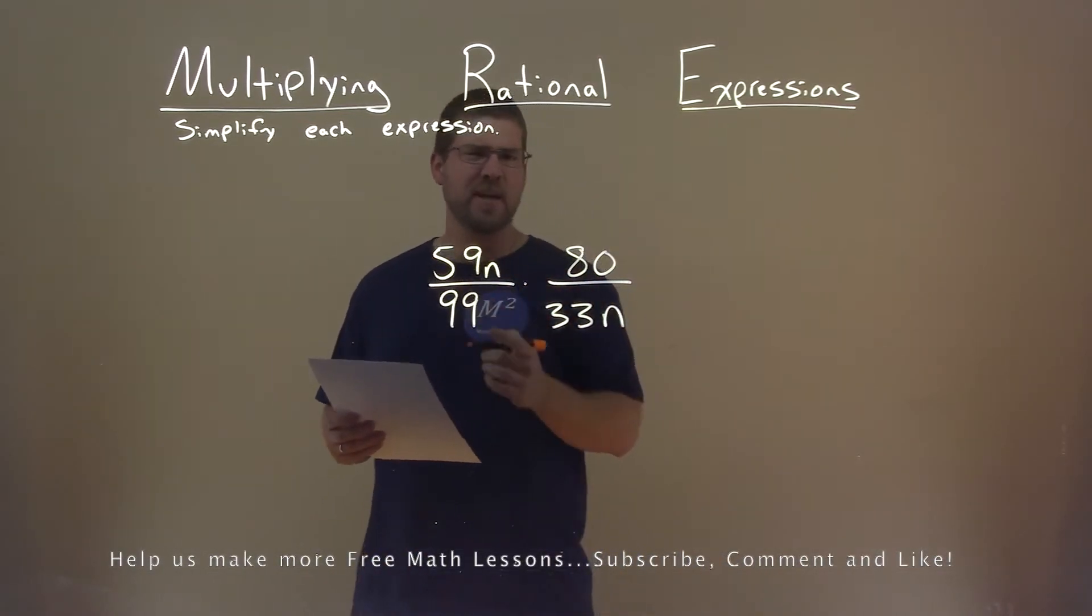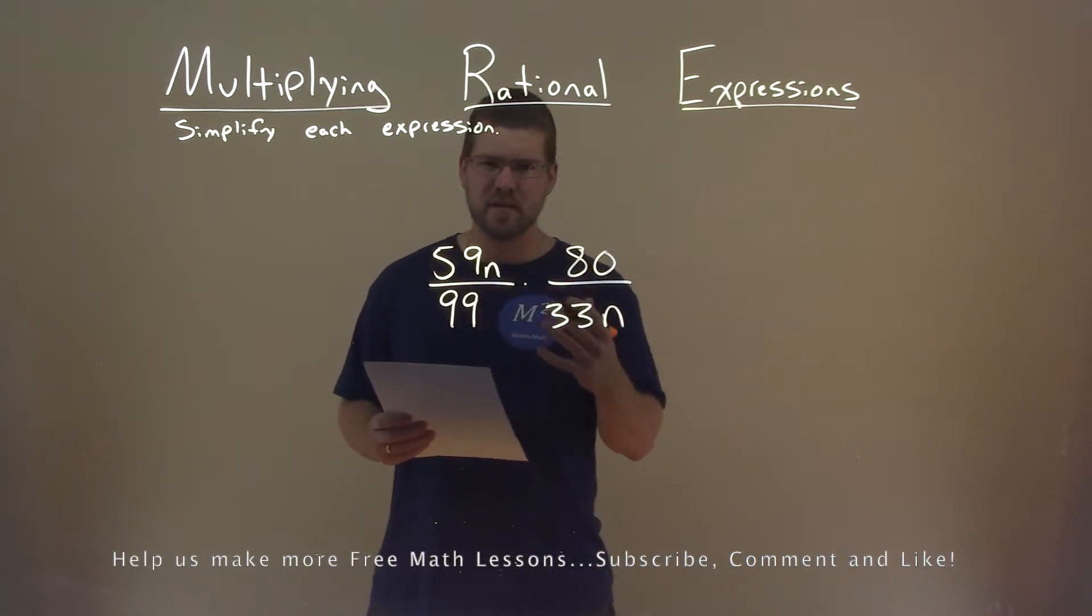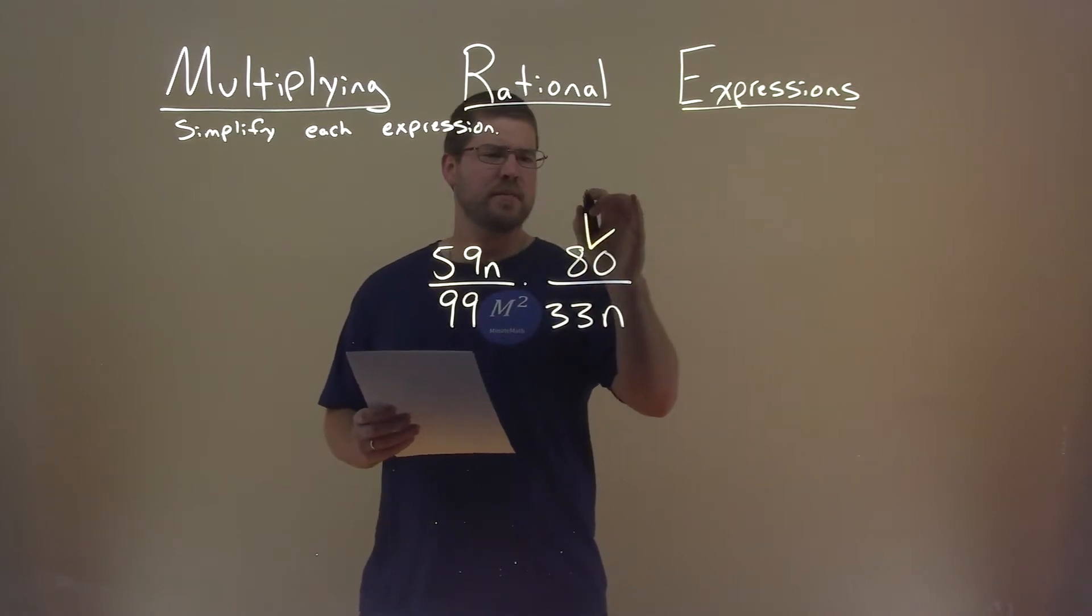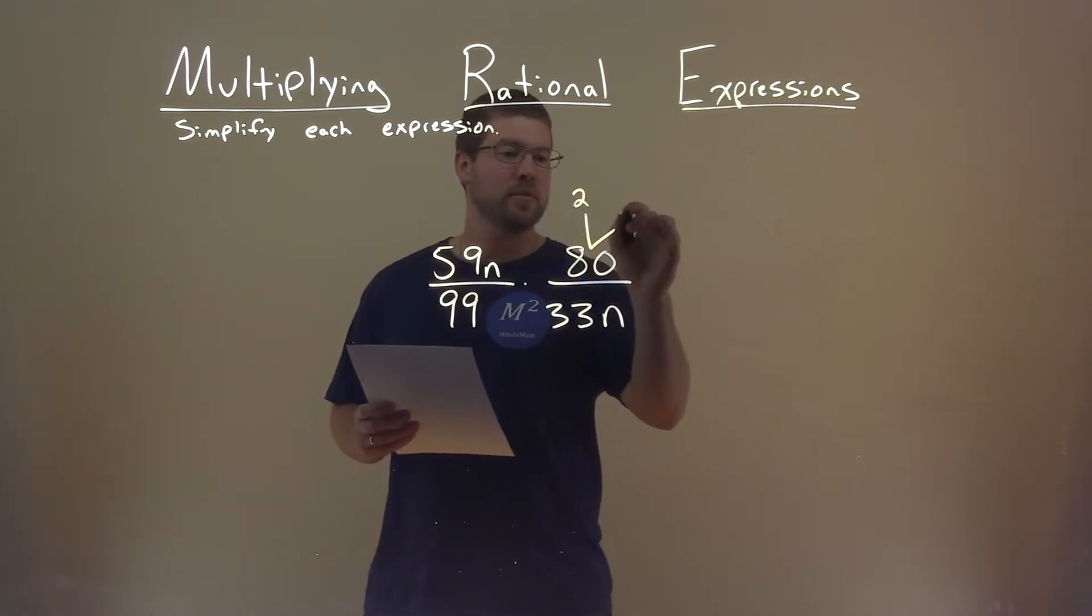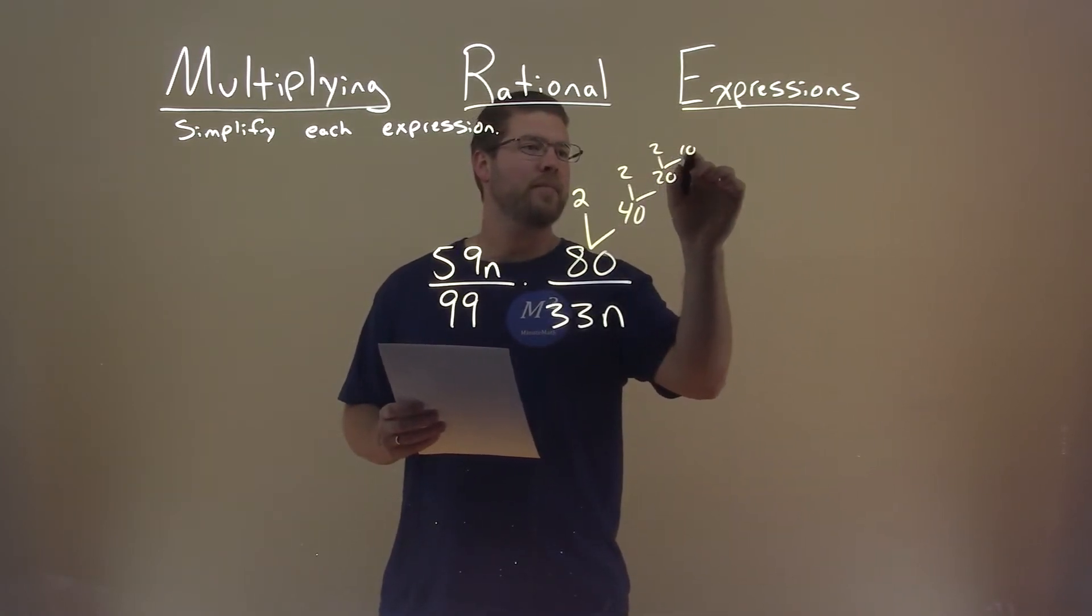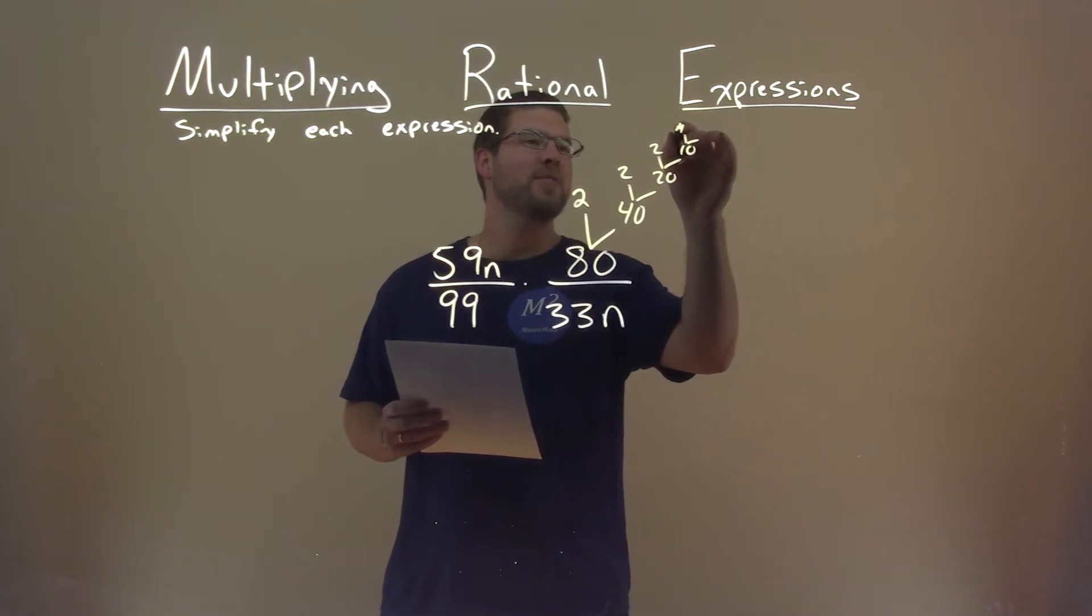So 59, well that's a prime number, doesn't really break down. So 80, that's 2 and 40, and 40 again can break down to be 2 and 20, and then we have 2 and 10, and 10 being 2 and 5.